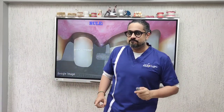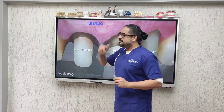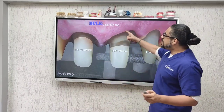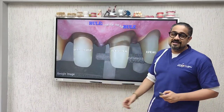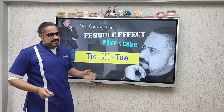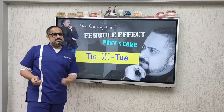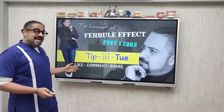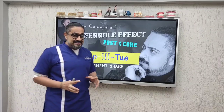As I end this Tipsy Tuesday, let me share a rule: look out for the ferrule. Remember, ferrule is king when it comes to abutments for endodontically treated teeth. Friends, that was my Tipsy Tuesday for today. As always, please go ahead and like, share your comments, and tag your friends as we learn to make prosthetic dentistry more predictable and enjoyable, one Tuesday at a time.